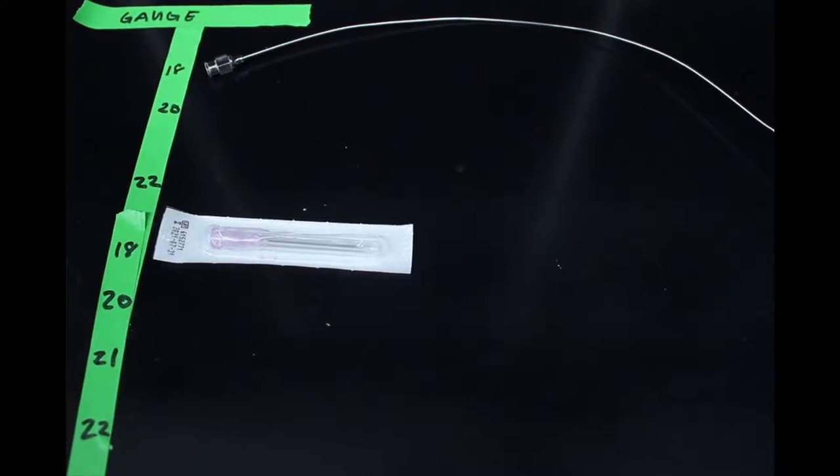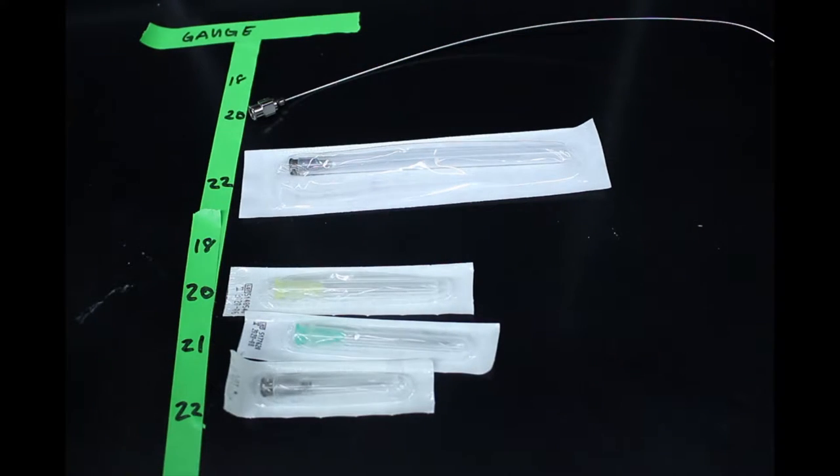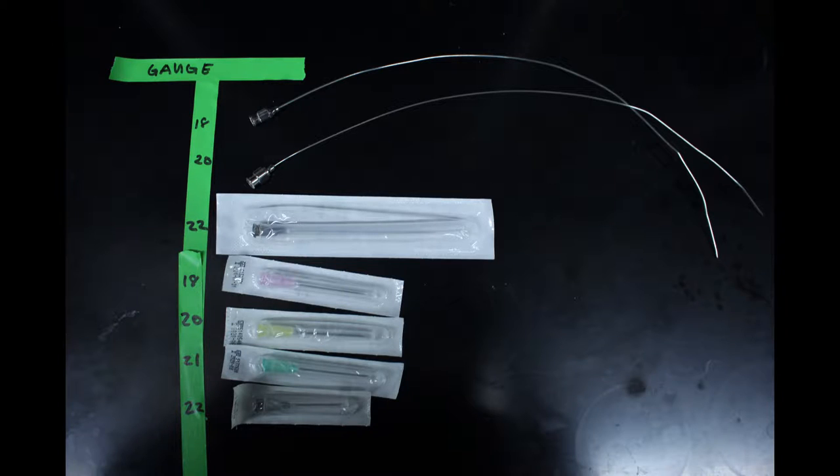Typically, smaller gauge needles are used for solvents and viscous reagents and thinner needles for reagents. Disposable needles are used for reagents that may clog the needle making it difficult to be cleaned.